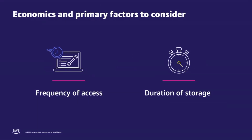In evaluating when you should use S3 Glacier Instant Retrieval, there are two factors to consider. The first is the frequency of access, and the second is the duration of storage. S3 Glacier Instant Retrieval is the ideal storage class if you access data once per quarter. Although the storage price is lower than S3 Standard Infrequent Access, the cost to access data is slightly higher, meaning there's a break-even point where if your data is accessed frequently enough, it makes sense to keep that in S3 Standard Infrequent Access or perhaps even S3 Standard.